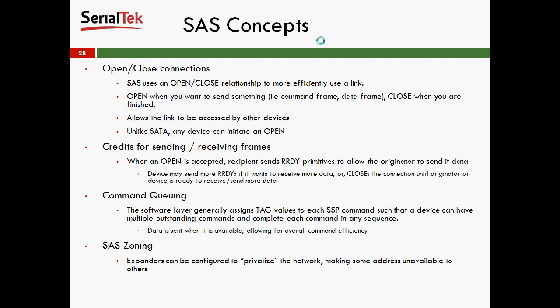There is also a thing called SAS zoning. This allows expanders to be configured to privatize the network, making some addresses unavailable to others. Essentially, this group of drives is for this department, this group of drives is for another department, and this group of drives can be used by both departments.